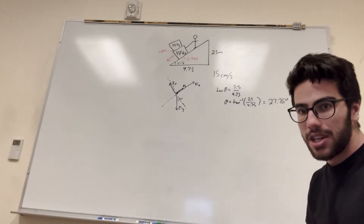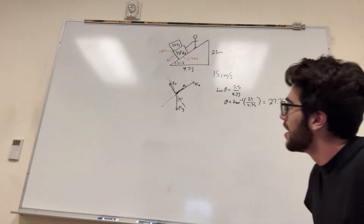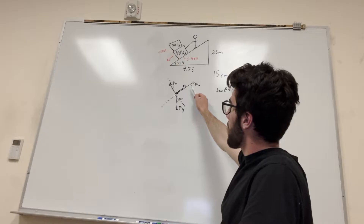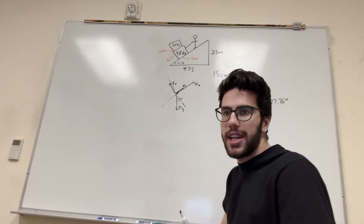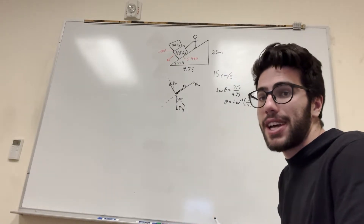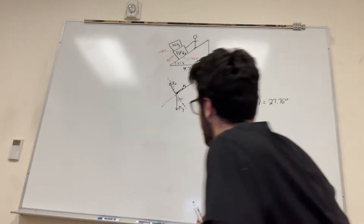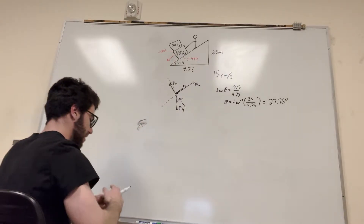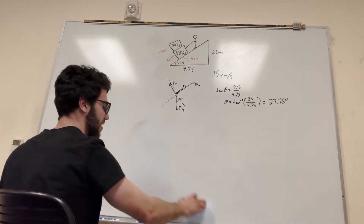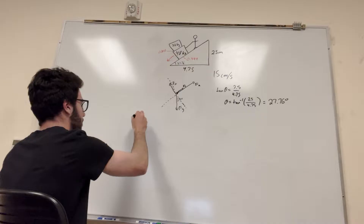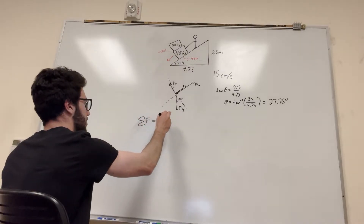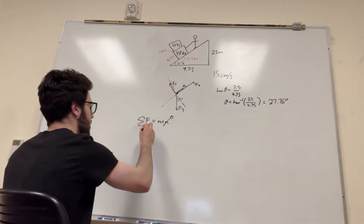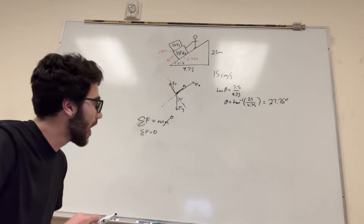Let's find the forces. We're going at constant speed, which means acceleration equals zero. So when we write out the sum of forces — sum of forces equals mass times acceleration — because acceleration is zero, the sum of our forces equals zero. That simplifies things a lot.